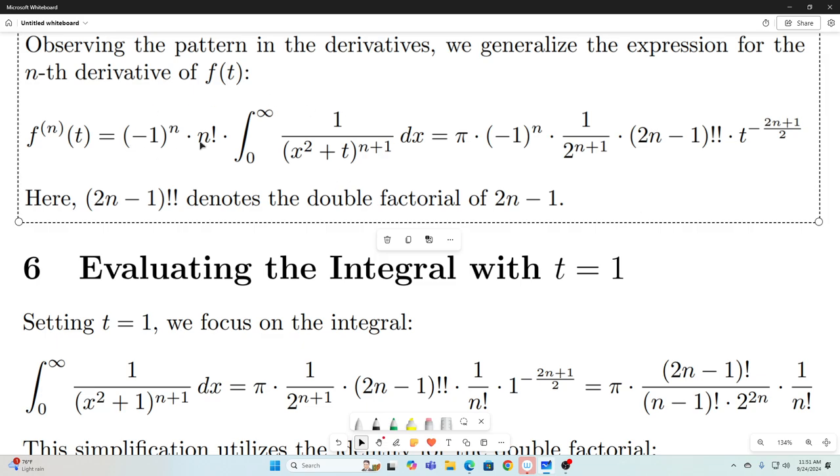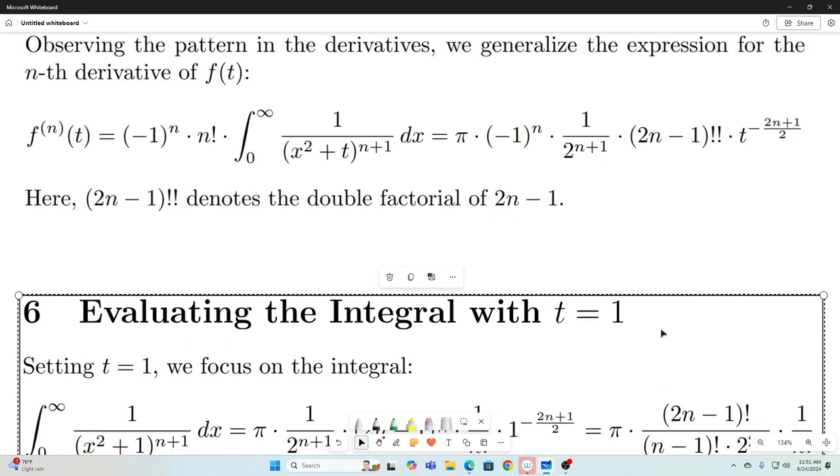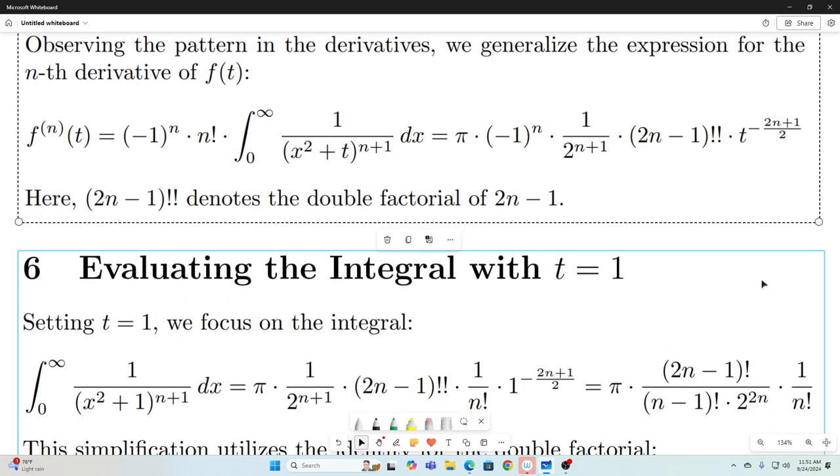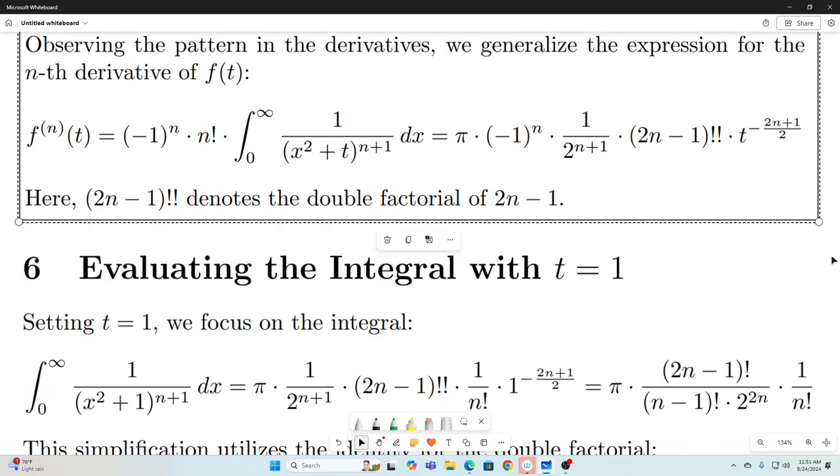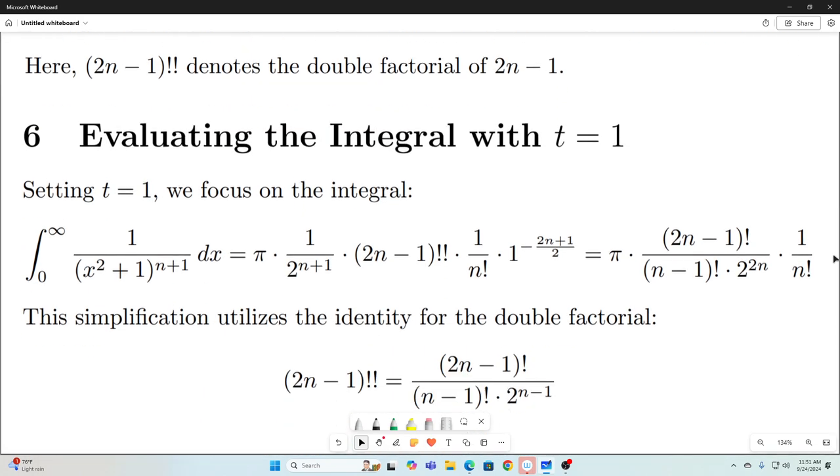So now what we're going to do is we're going to evaluate this equality at the point t equals one. And that's helpful because this whole thing right here will drop out. It'll just go to one. So if we let t equal one, we get this. I just replaced the t with a one and basically that just goes away.